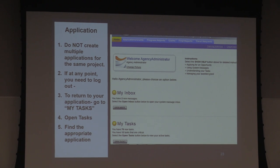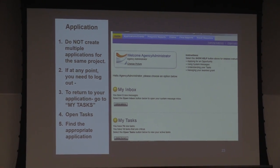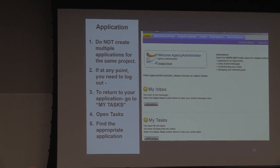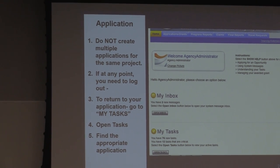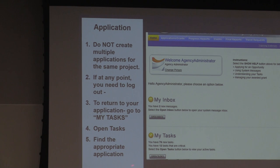Please do not submit multiple applications. I had one two years ago that submitted 20 applications — Scarlett called me and asked me to have them deleted. If at any point you need to log out, when you return, the My Task button at the bottom of the page will let you open up that grant. Click on that grant number and it will open up the grant for you. You don't have to create another grant every time.